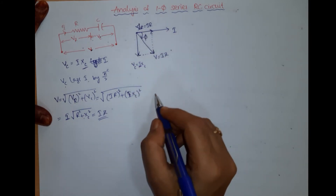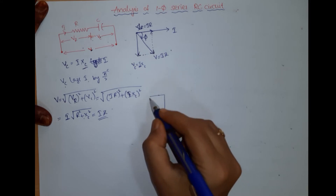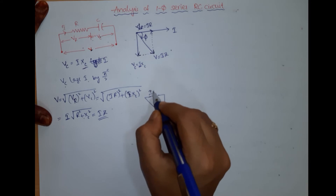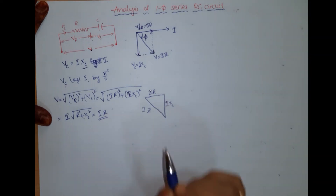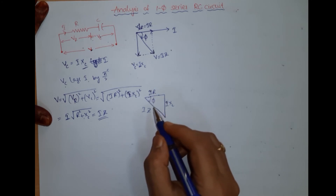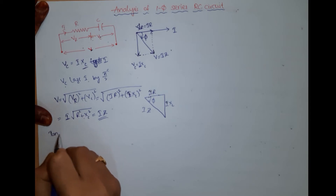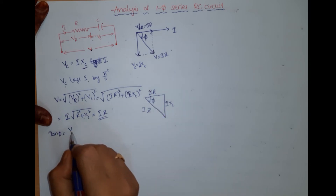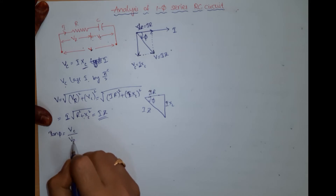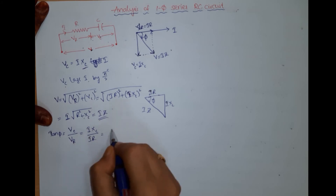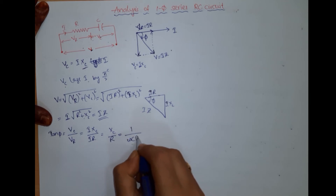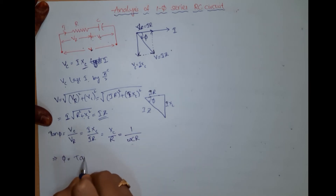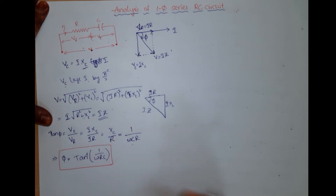Now from the triangle — the impedance triangle — this becomes IR, IXc, and IZ. So R, Xc, Z, and this is the angle phi. From this triangle, tan phi is the opposite side Vc divided by the adjacent side Vr, which gives IXc by IR, that is Xc by R. Since Xc is 1 by omega C, this becomes 1 by omega CR. So the phase angle can be given by tan inverse of 1 by omega RC. This is the formula for finding the phase angle in the case of a series RC circuit.